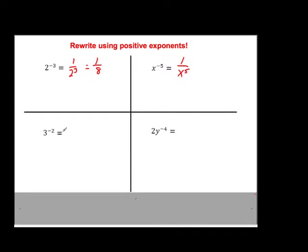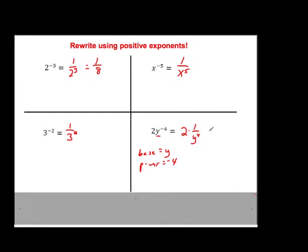3 to the negative 2 — it moves to the bottom: it is 1 over 3 squared. How about 2y to the negative 4? The base of the negative 4 exponent is y — it's not the 2, just the y. So the 2 is just staying there. The y comes to the bottom: this is 2 over y to the fourth. Really the 2 stays on top and y ends up on the bottom, like multiplying fractions: 2 over 1 times 1 over y to the fourth.